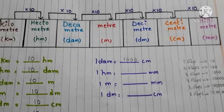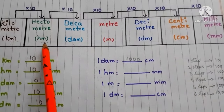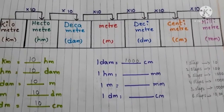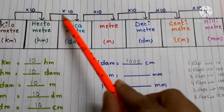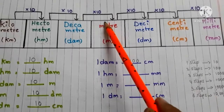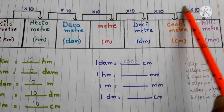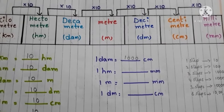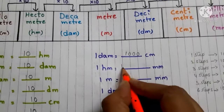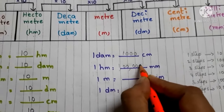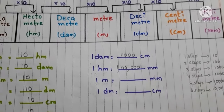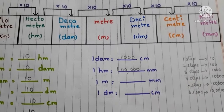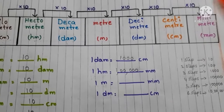Next: 1 hectometer equals how many millimeters? Find hectometer in the table, then find millimeter. Count the steps: one, two, three, four, five — five steps. So we multiply by 100,000 (one lakh). Therefore, 1 hectometer equals 100,000 millimeters.